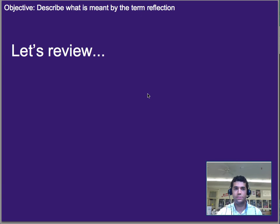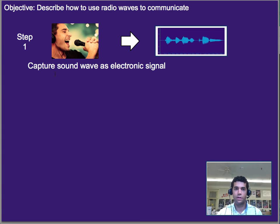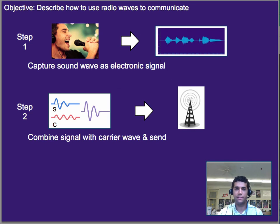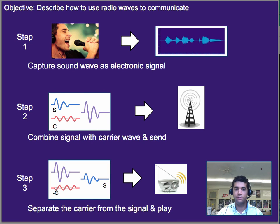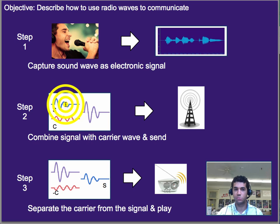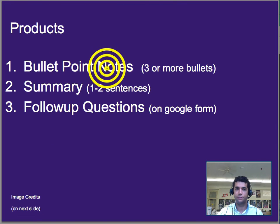Welcome back. The process is: step one, we capture the sound wave and turn it into an electronic signal. Step two, we combine that electronic signal wave with the carrier wave, and then send it out — broadcast it via radio tower, cell phone antenna, or any sort of antenna. Then on the receiving end, we separate that carrier wave from the signal to get what the original signal was. That original voice or signal is now coming back out, and that's what's played. That's it for the basics of communication. Three or more bullet points worth of notes, a one to two sentence summary, and do your follow-up questions on Google Forms.